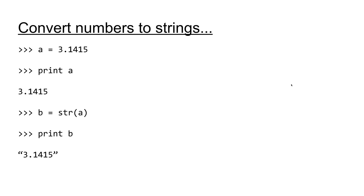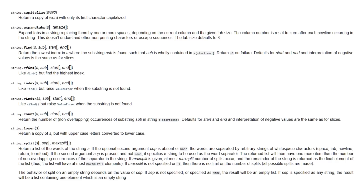Python provides a convenient function called str, which allows you to convert any number — be it integer, float, and so on — into a string. Here we're setting A equal to 3.1415, the first couple digits of pi, and then printing A out. We're setting B equal to str of A, which is going to convert A into a string. Printing out B, we can see we have the same output as when we were printing A, except now it's in string format. These are just some of the most common Python string operations. Pause the video here if you'd like to jot these down.